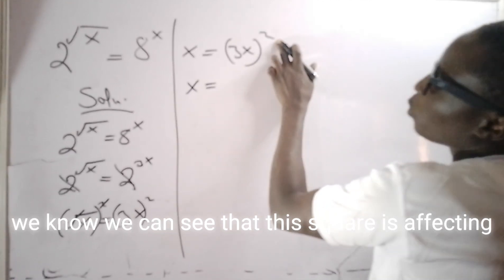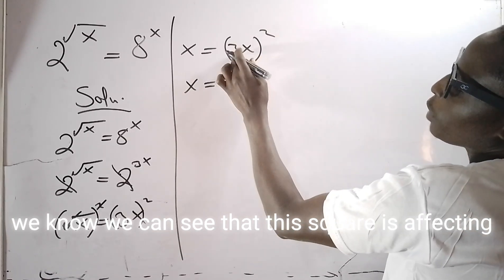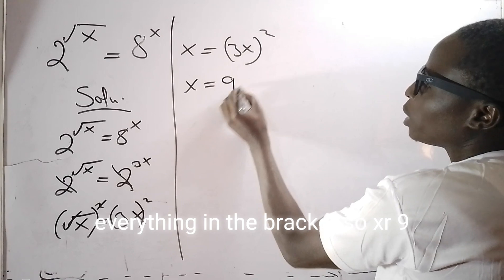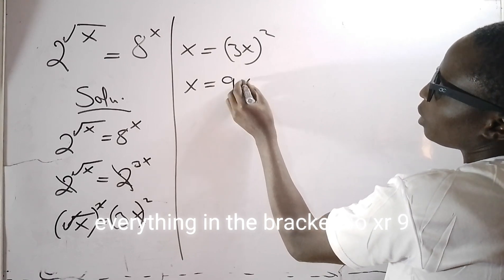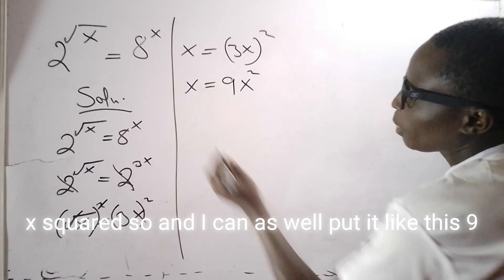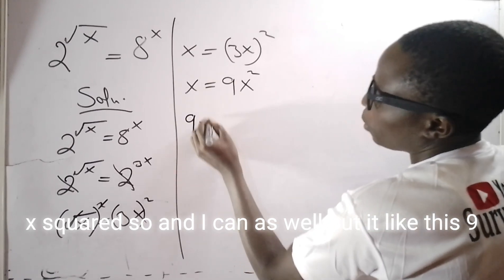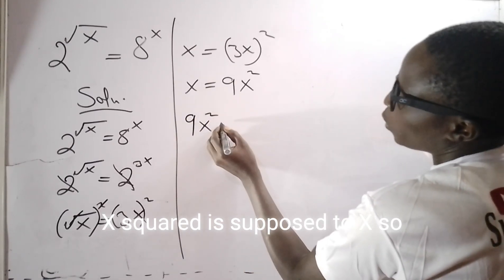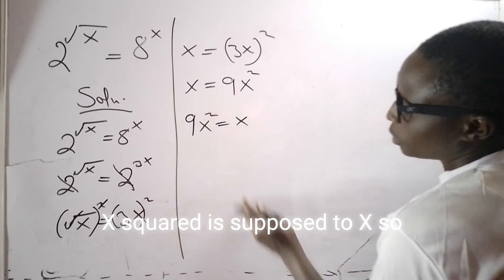We can see that this square is affecting everything in the bracket, so x equals 9x squared. And I can as well put it like this: 9x squared is equals to x.